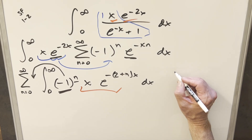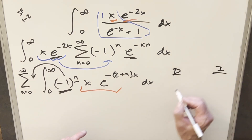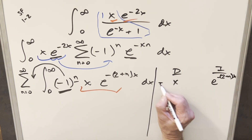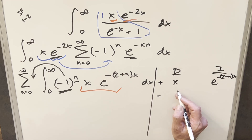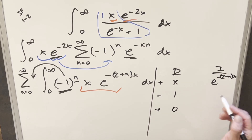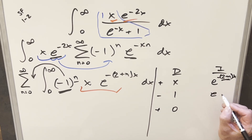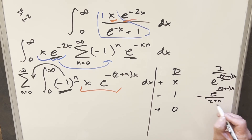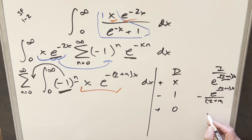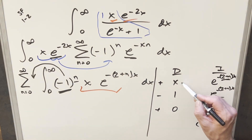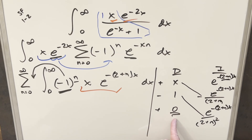Let's go ahead and do our integration by parts using the DI method — tabular integration — over here to the right. We'll differentiate x and integrate e^(−(2+n)x). Differentiating x gives 1, then 0. Integrating, we pull out (−1/(2+n)) as a constant, giving e^(−(2+n)x)/(−(2+n)), and doing it again gives e^(−(2+n)x)/(2+n)^2. Since we reach 0, we don't need to integrate the last row.